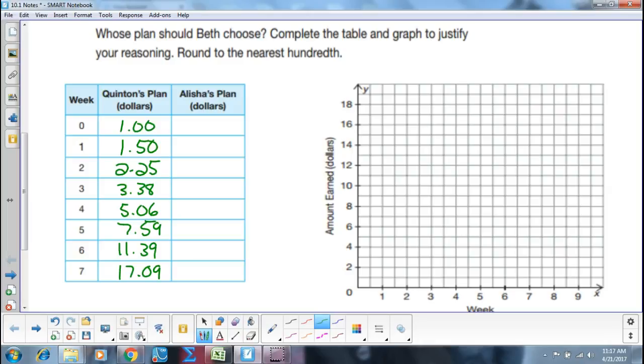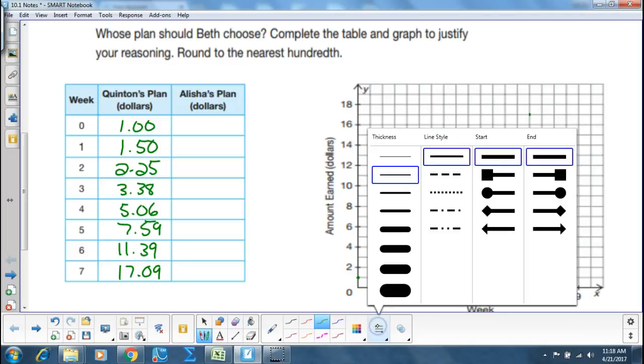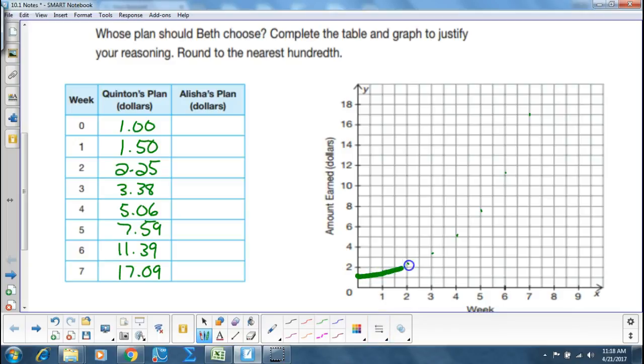So that means that here at zero, I started with a dollar. Then I went to a dollar fifty. Then I went to 2.25. Then 3.38. Then 5.06. Then 7.59. Then 11.39. What kind of a graph do we have? That is an exponentially growing graph.